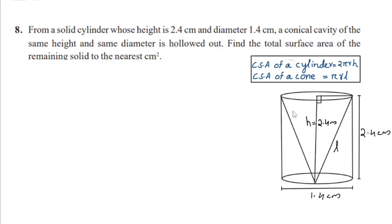From the solid cylinder, a conical cavity is hollowed out which reaches to the bottom of the cylinder. So the height of this conical cavity is equal to the height of this cylinder, which is equal to 2.4 cm.